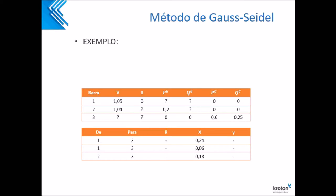A gente tem três barras, como vocês podem ver. Para nós, cada barra tem uma letra. O que significa? Eu tenho tensão, eu tenho o ângulo da barra, eu tenho a potência gerada, eu tenho a carga gerada, eu tenho a potência consumida e a carga consumida. Note que para cada barra eu tenho todos esses valores — barra 1, barra 2 e barra 3.